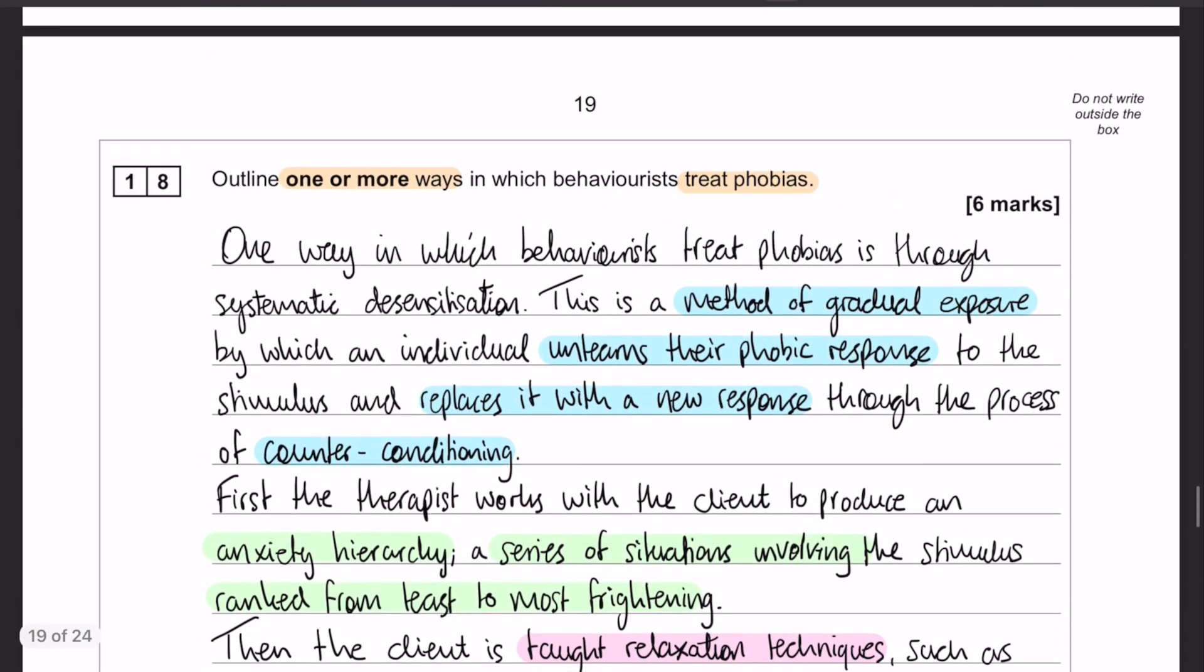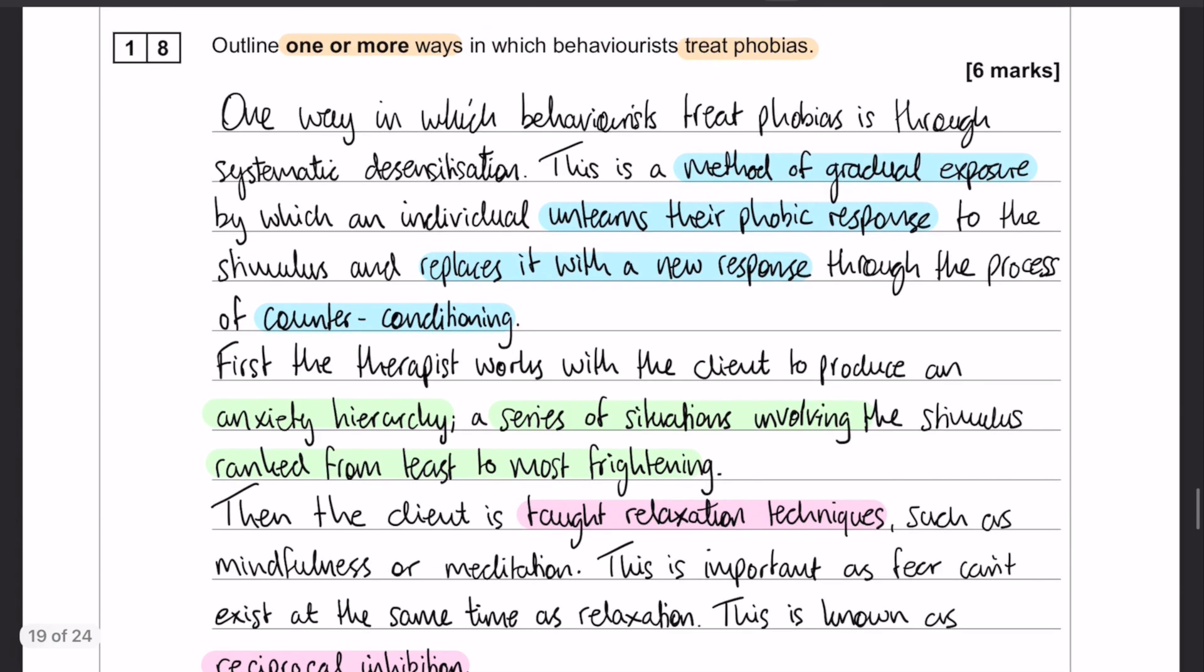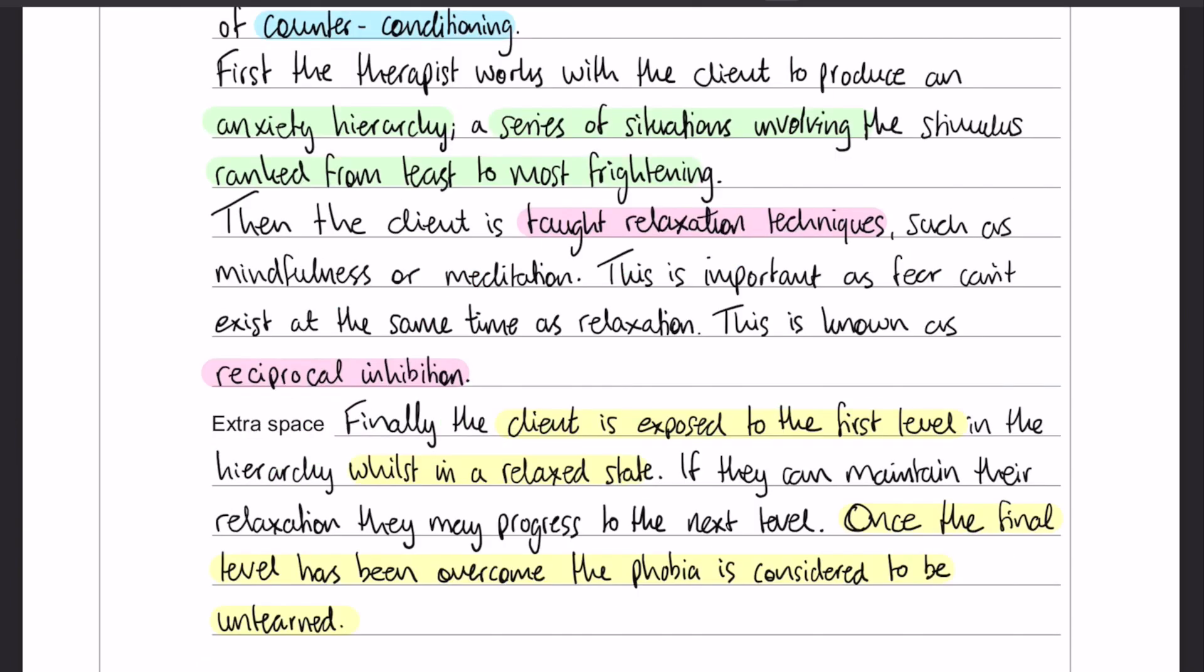Okay, so let's go to the beginning again, just quickly. So, little introduction with my first little key word of counter conditioning, and then my three elements of systematic desensitization, anxiety hierarchy, relaxation techniques, and exposure. Reciprocal inhibition is my other key word that I'm going to put in there, and that should be plenty.